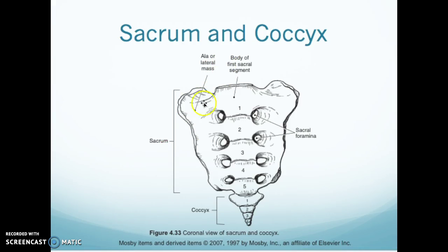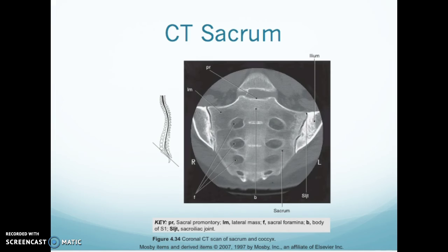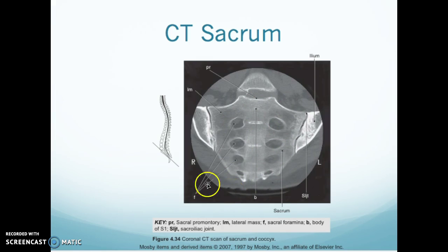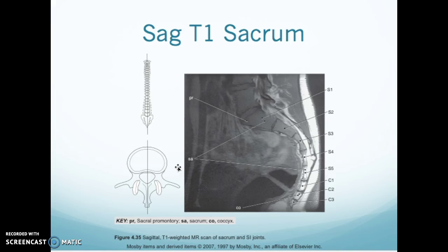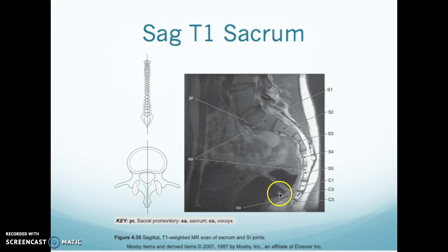The sacrum and coccyx: you have your ala or lateral mass, your first segment, your foramina — and you count 1, 2, 3, 4, and 5 — then between 3 and 5 bones in the coccyx. On CT of the sacrum you have your sacral promontory, your ilium, your sacroiliac joint, and your sacral foramina. On MRI T1 sagittal of the sacrum, here is S1, 2, 3, 4, and 5, and this person has 3 coccygeal bones visible.